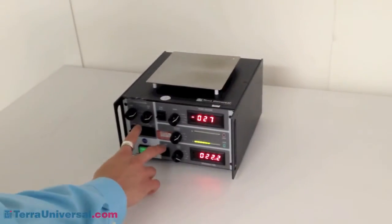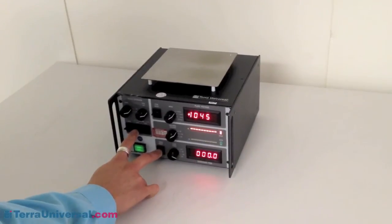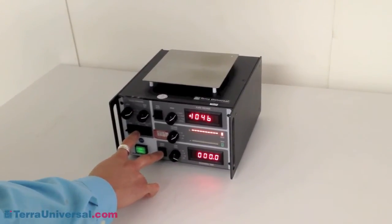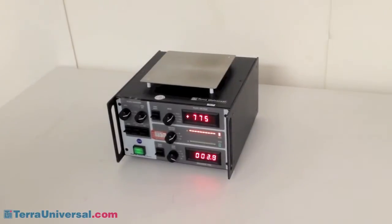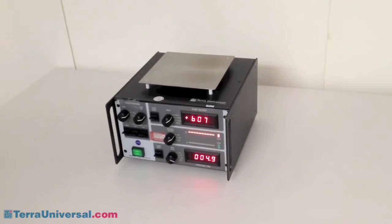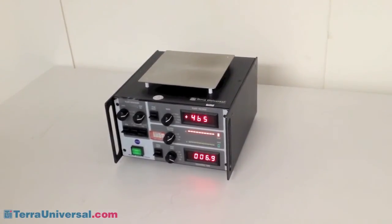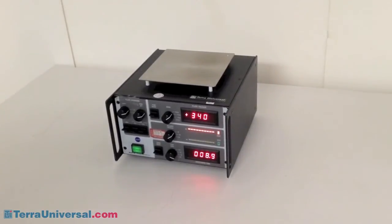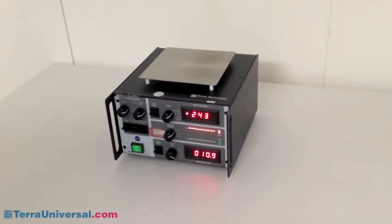Our first test using a charged plate monitor will measure the neutralization of positive ions. First, we generate a surface charge of 1,000 volts. Then, with the fan filter unit and ionizing bar turned on, we measure the time it takes for the positive charge to drop below 100 volts.